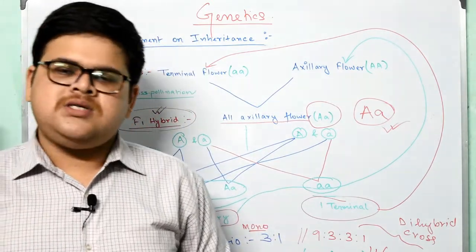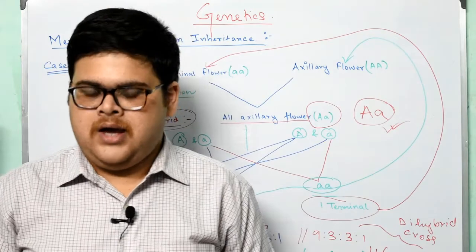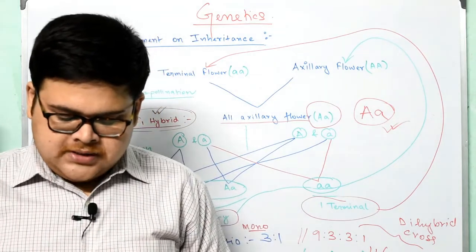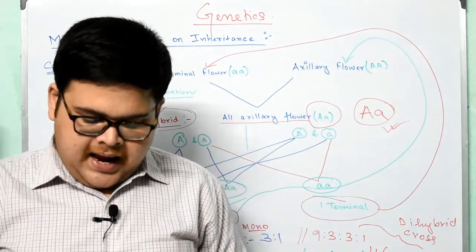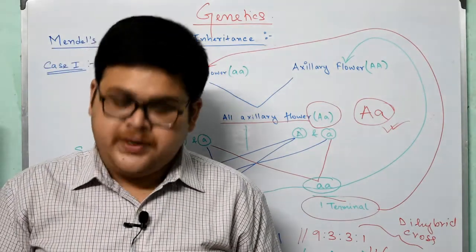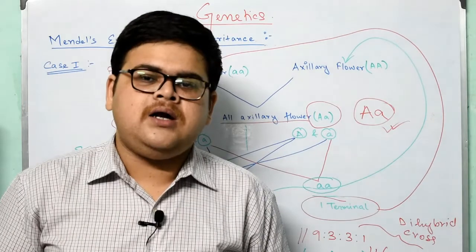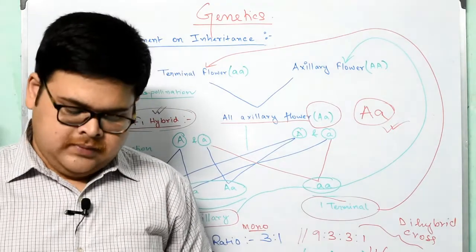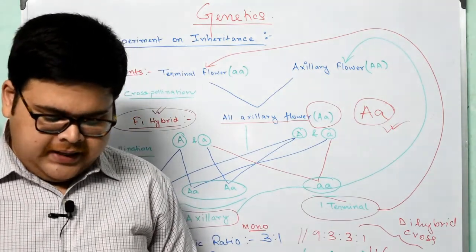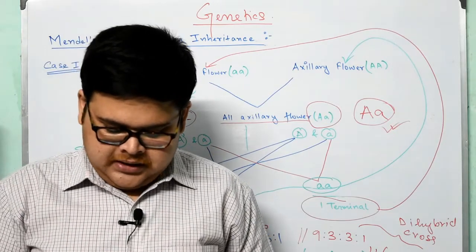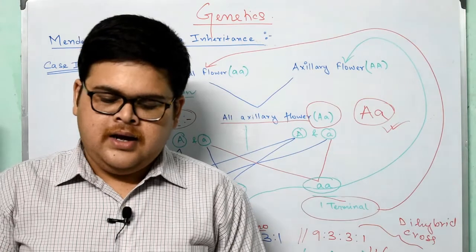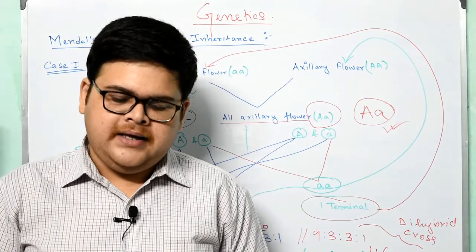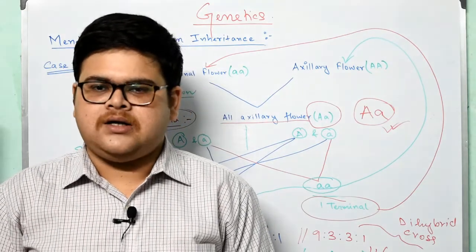Direct exam questions will come from here: state Mendel's laws of inheritance, or what are the applications of Mendel's law? Application 1: knowledge of Mendelian principles gives us an idea about new combinations in hybrids and allows us to predict their frequency in the next, third, or fourth generation. Application 2: such information is of great importance to both plant and animal breeders for producing better breeds. Application 3: new types of plants with new combinations of useful characters can be produced by hybridization.